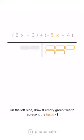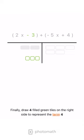On the left side, draw three empty green tiles to represent the term negative 3. Finally, draw four filled green tiles on the right side to represent the term 4.